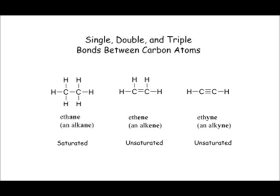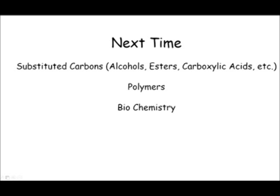That's pretty much it for this first video. Next time we're going to look at substituted carbons — alcohols, esters, carboxylic acids — lots of different bonds to other atoms that give different properties. We're also going to look at polymers, which are large-chained repeating structures built out of smaller organic molecules. And finally, we'll tie this into biochemistry and see how organic chemistry is the study of life. Carbon chemistry is about life — carbon is the most important atom for life.